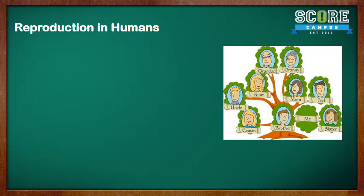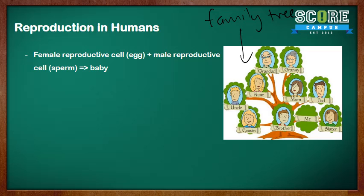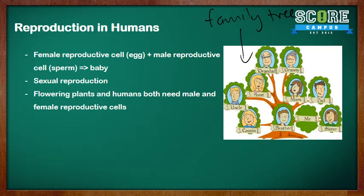Let's go into reproduction in humans. What you see here is a family tree, which basically shows the entire family. Humans can reproduce when a female reproductive cell, which is the egg, fuses with the male reproductive cell, which is the sperm. This is known as sexual reproduction. The same thing happens in flowering plants — both flowering plants and humans need the male and female reproductive cell for reproduction to happen.